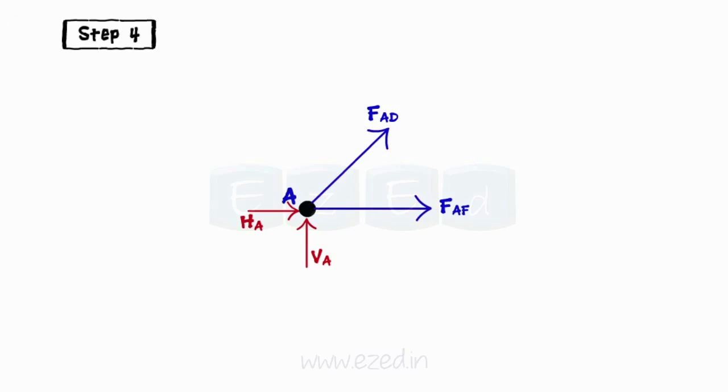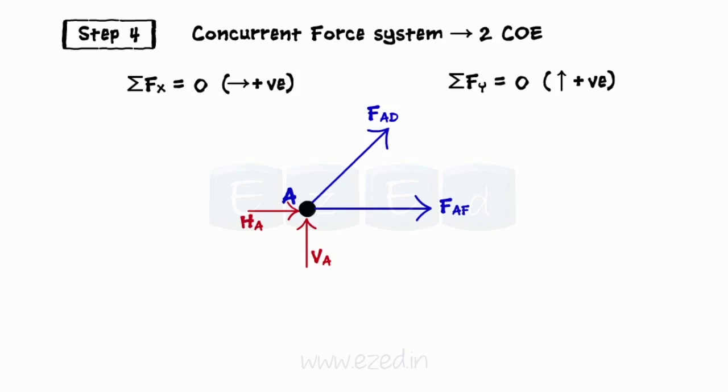Step 4: The forces at the joint form a concurrent force system to which we can only apply two conditions of equilibrium. Sum of all forces in x direction is zero. Sum of all forces in y direction is zero.